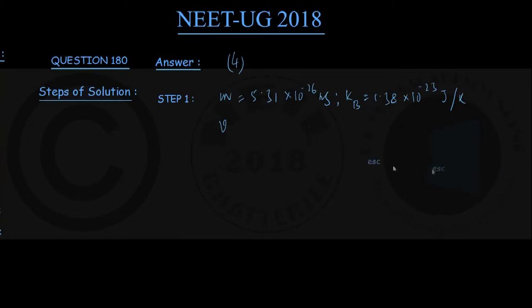You are supposed to remember the escape speed from Earth's surface is 11.2 kilometer per second, or writing scientifically, 1.12 × 10^4 meter per second. If you don't remember it, let me give you a formula.